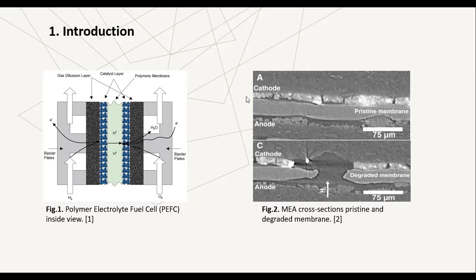This factor provides a valuable indicator of the health of the membrane. A pristine membrane has a constant low hydrogen crossover, whereas a degraded membrane presents a significant increase in the hydrogen crossover, as shown in figure two.